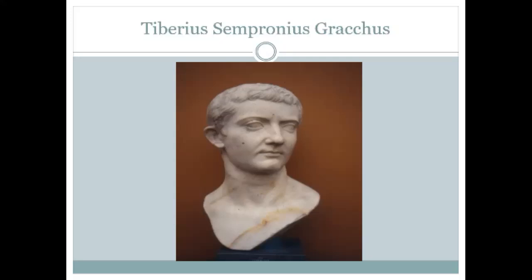By the normal standards of behavior in the Roman Republic, Gracchus having been vetoed should have simply backed down. But he didn't. He entreated Octavius to withdraw his veto — all of this taking place in person with all 10 tribunes on the speakers' platform in the forum, with the crowd right there watching. We hear that Tiberius entreated Octavius with tears in his eyes, even clasping at his knees, saying please withdraw your veto. Octavius refused.